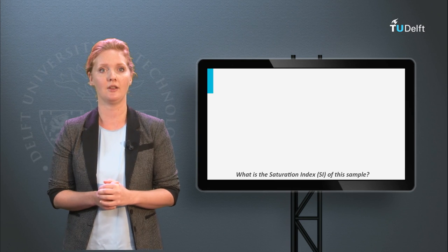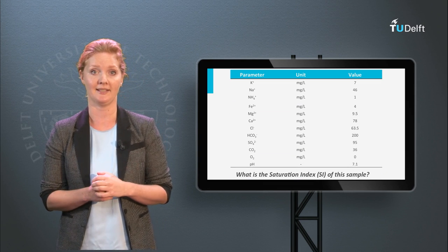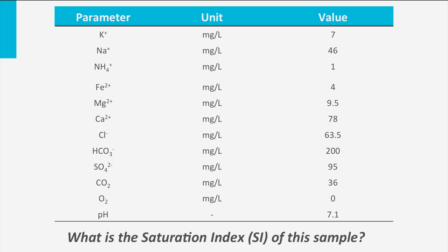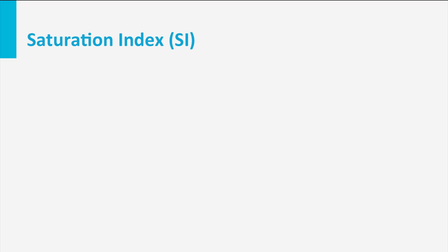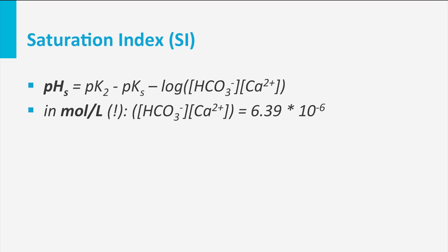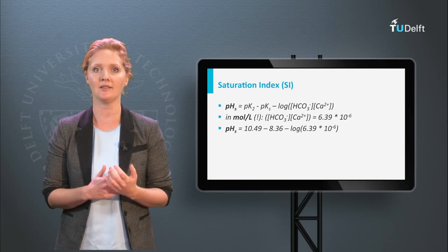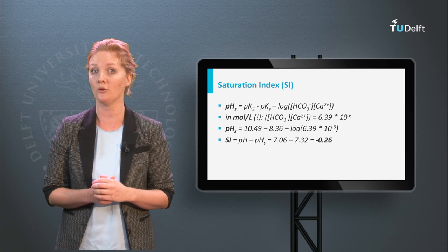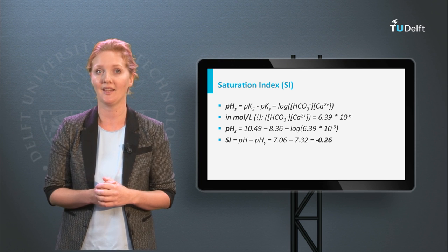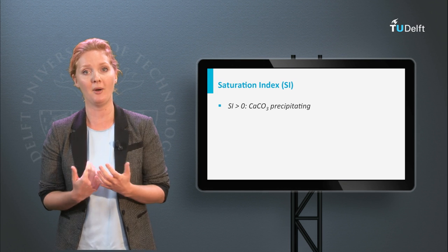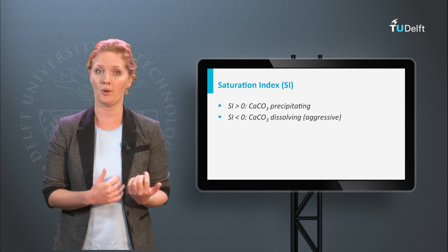Let's put this knowledge into practice. On this slide, the water composition of a groundwater sample is depicted. The question for you is: calculate the saturation index. I advise that you pause this video until you have performed the calculation. I hope you started with the calculation of the pHs, where it is crucial to use the unit mole per liter for bicarbonate and for calcium. With a pHs of 7.32 and a water pH of 7.06, it can be calculated that the saturation index is −0.26. This water is calcium carbonate aggressive because the SI is below 0. A saturation index above 0 is calcium carbonate precipitating, and an SI below 0 will dissolve calcium carbonate.